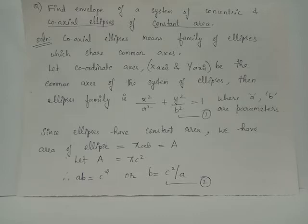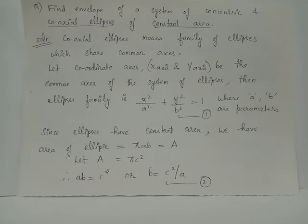Since all these ellipses have constant area, we assume the area of the ellipse, given by πab, equals πc², where c is just a constant. Thus πab = πc², and cancelling π from both sides gives ab = c², from which we have b = c²/a.